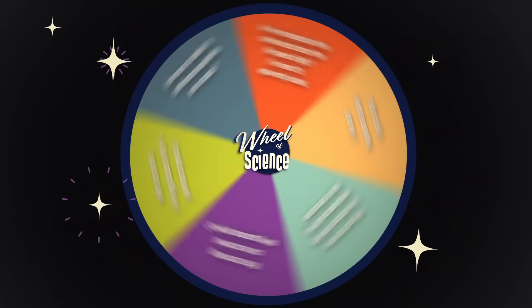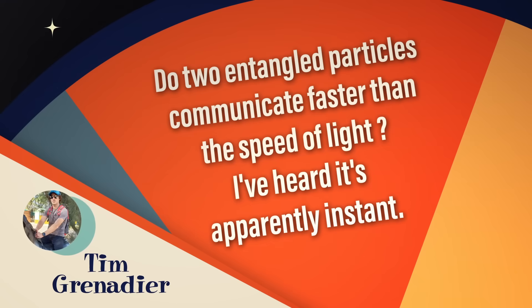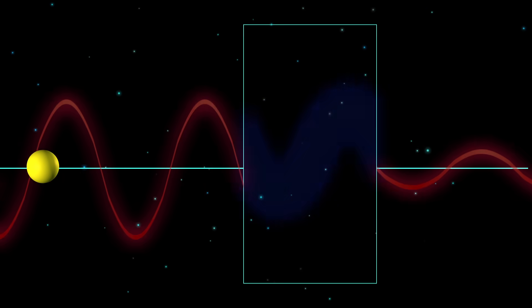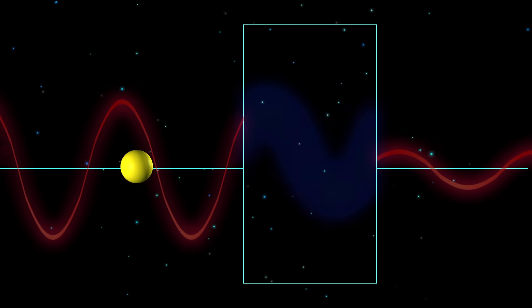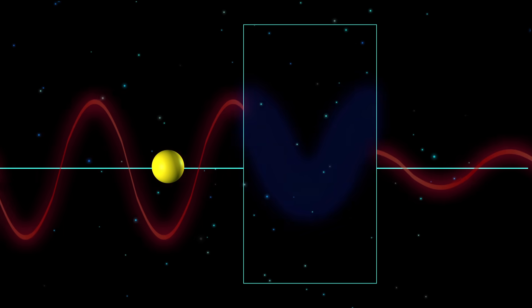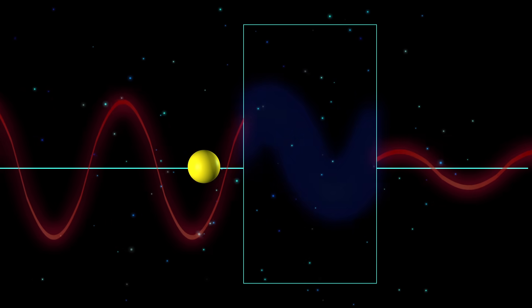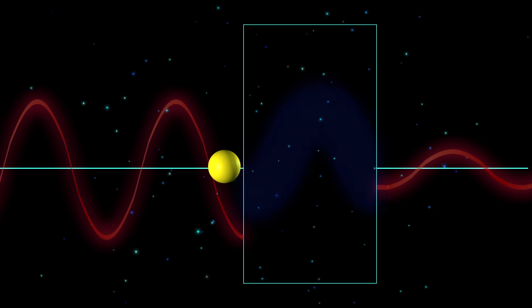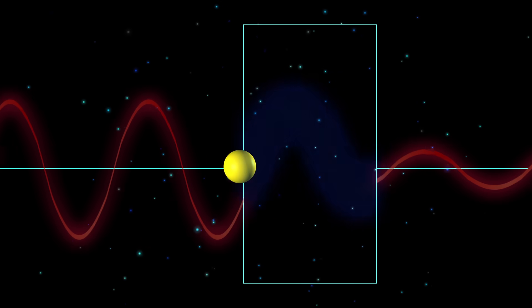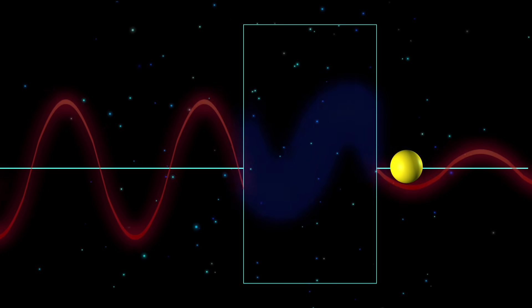All right, Neil, you ready for another question? Spin that wheel. Tim Gurr says: do two entangled particles communicate faster than the speed of light? I've heard it's apparently instant. It turns out one of the rules of quantum physics is that because particles are also waves, if there's a particle on this side of a hill and it can't get across to the other side, the wave function does exist a little bit on the other side of the hill. So the electron can disappear here and reappear there, collapsing the wave function, and the electron would have moved from there to there instantly — basically faster than the speed of light. It's called quantum mechanical tunneling, and it happens all the time. And it is mysterious and beautiful.